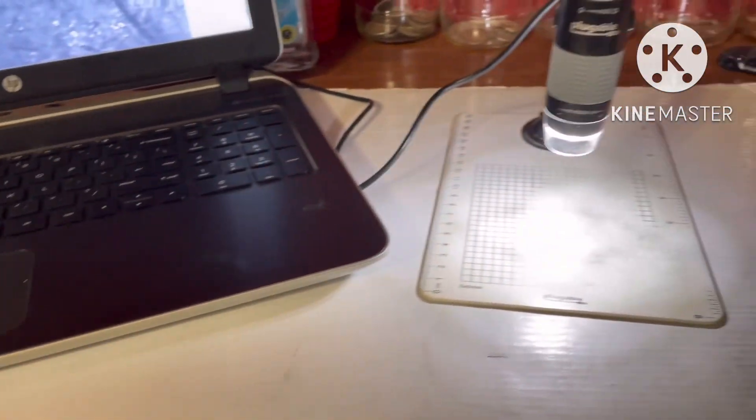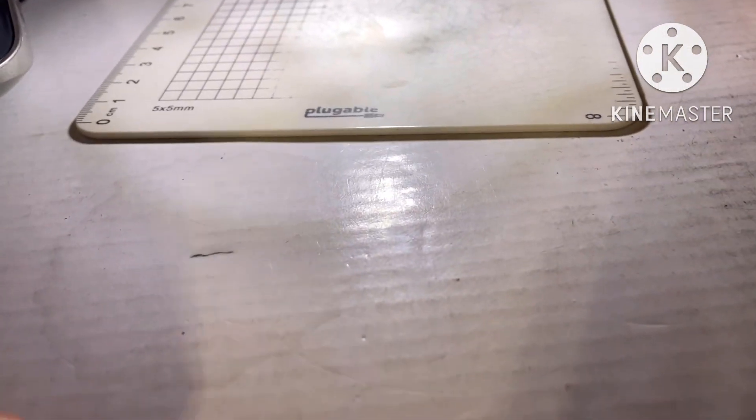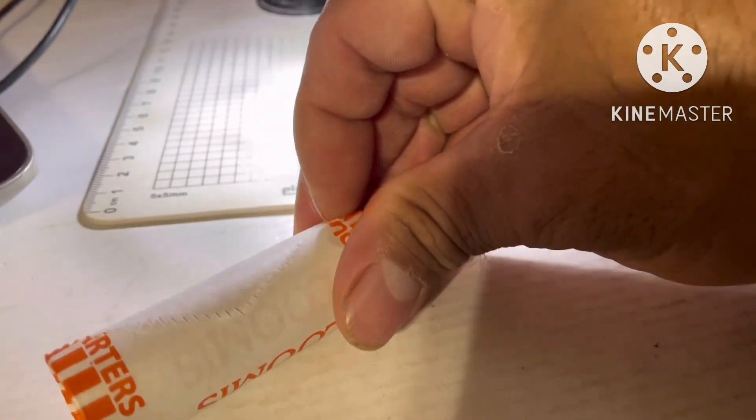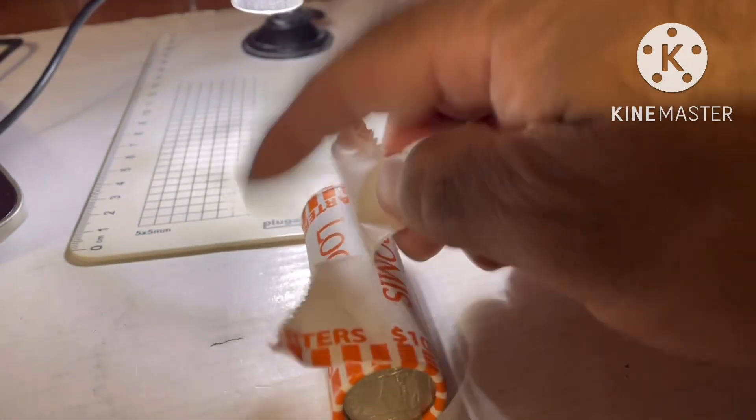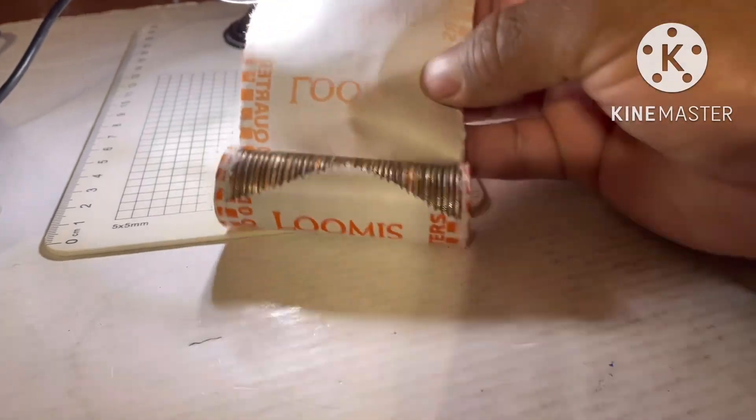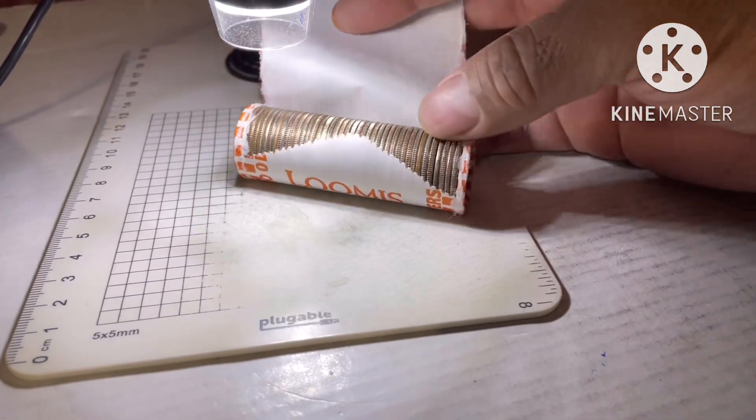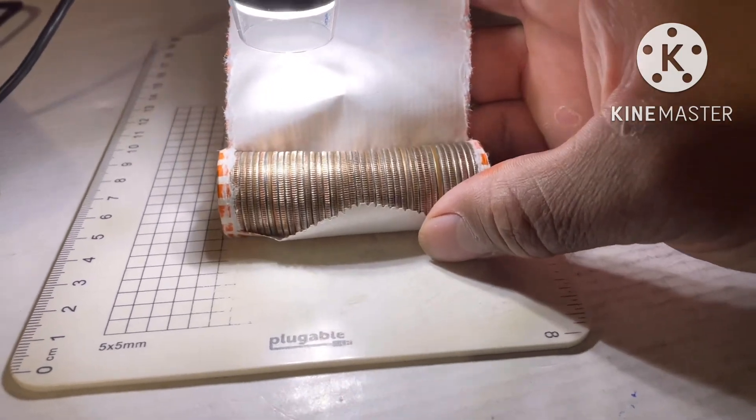All right guys, I got it all set, my microscope. Let's open the first roll and see if we got something good. I'm gonna do one hand so it's gonna be a little hard. Let's see if I see something silvery... no silver guys.